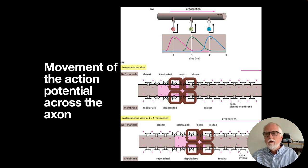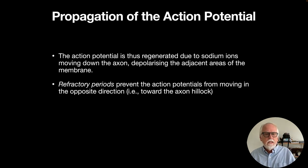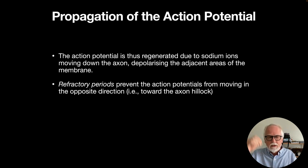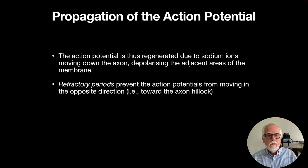As the signal moves along the axon, it turns on and off all the way to the axon terminal. There are refractory periods — brief timeouts after an action potential fires where that part of the membrane can't fire again, lasting a millisecond or two. This prevents action potentials from going back in the opposite direction toward the axon hillock, ensuring propagation only moves forward along the axon.